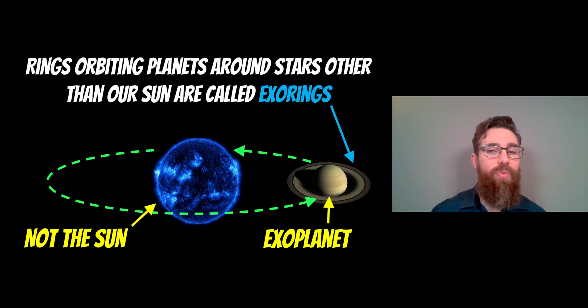And then finally, an exo ring is a ring system orbiting most likely a planet orbiting a different star. Again, it's not orbiting our sun. It's much further away and it's outside of our solar system. So we would refer to that as an exo ring because it's a ring system outside of our solar system.